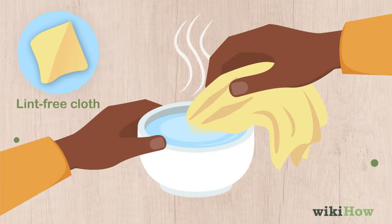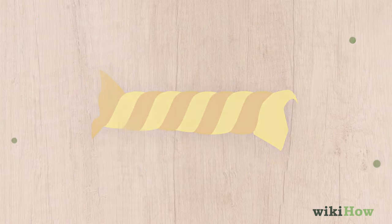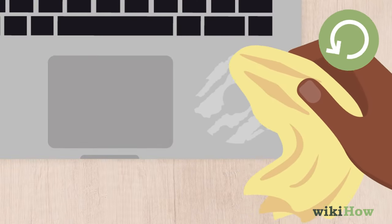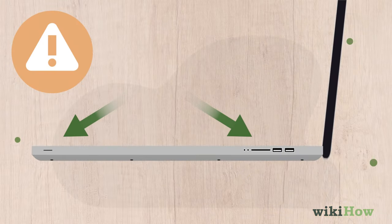Dip a soft, lint-free cloth in hot water and wring it out so it's damp but not dripping. Rub the sticky spot firmly with the cloth using circular motions. Take care not to get any liquid in the vents or the keyboard.